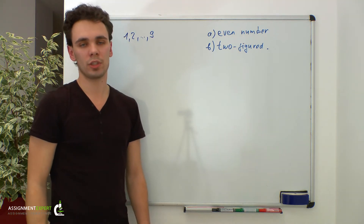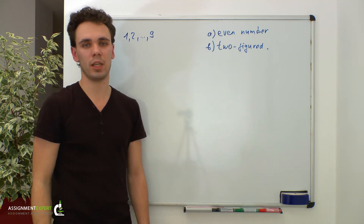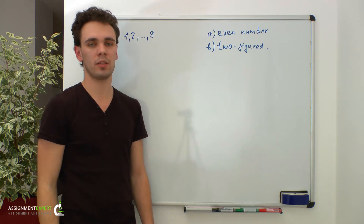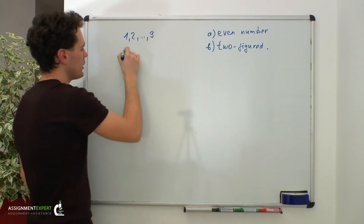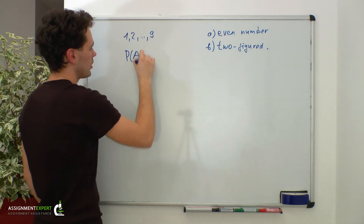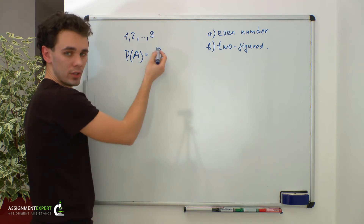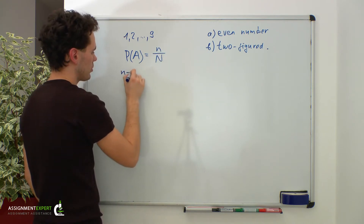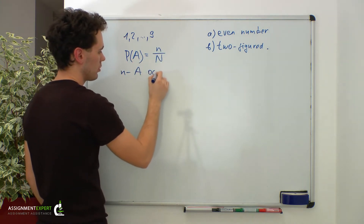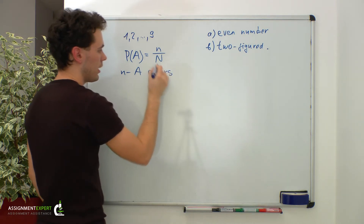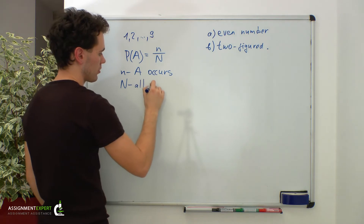As we know, due to the classical definition of probability, the probability of any event A can be calculated using the following formula: the probability of event A equals small n over capital N, where small n stands for the number of outcomes when event A occurs, and capital N is the total number of all possible outcomes.